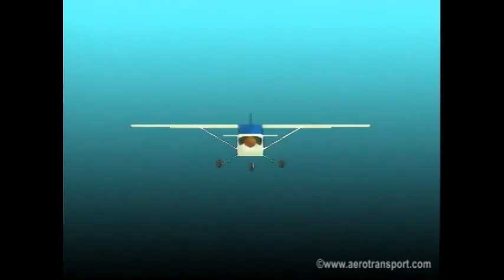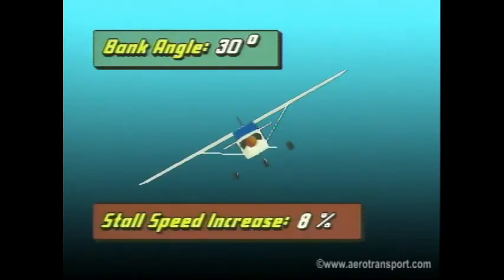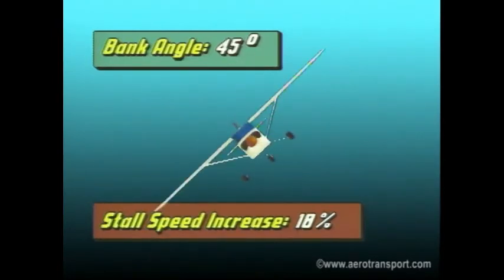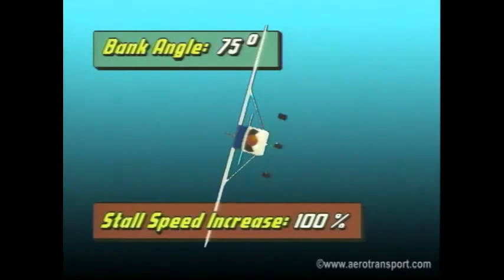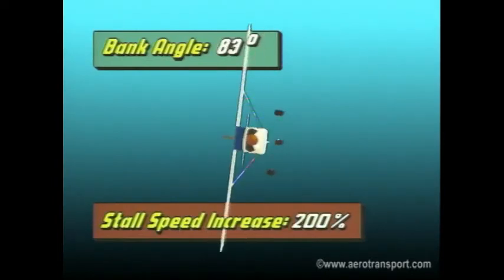As you were told, the stalling speed increases with the steepness of the bank. At 30 degrees, the stalling speed will increase by 8% over that of level flight. A 45-degree bank angle increases it by 18%. At 60 degrees it increases by 40%. The stalling speed increases by 100% at 75 degrees and by 200% at 83 degrees. Keep in mind the load factor also increases with the increase in bank angle.